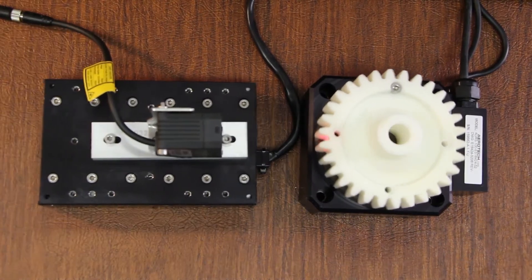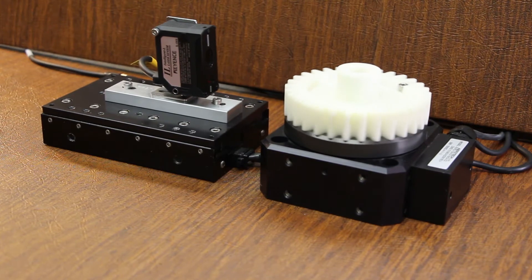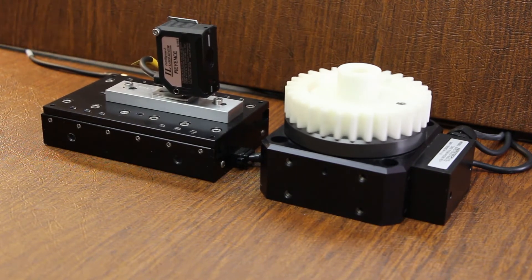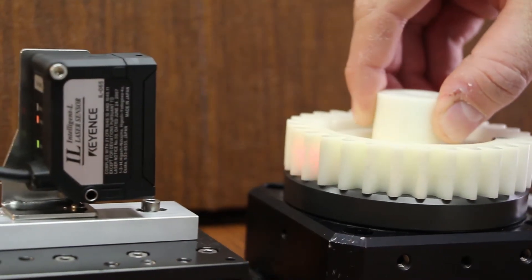As the gear spins, the laser displacement sensor will scan the profile of the gear teeth. The sensor outputs a minus 5 to plus 5 volt analog signal, which is then sent to the analog input of the A3200 controller.